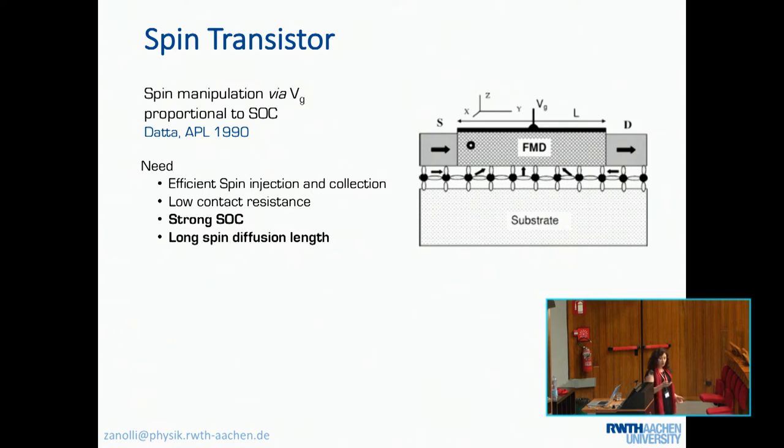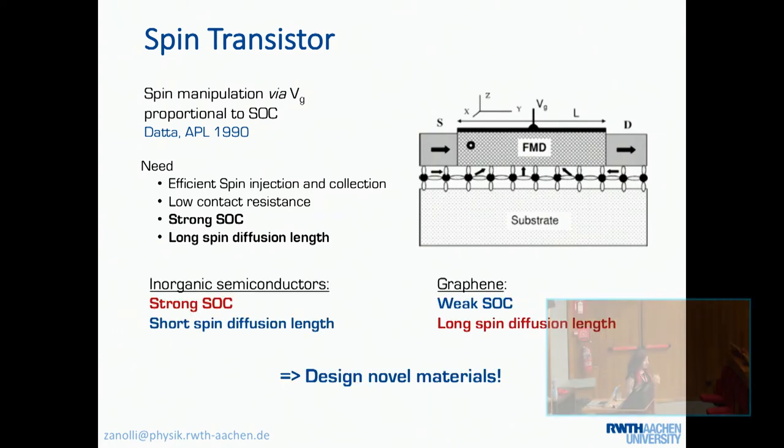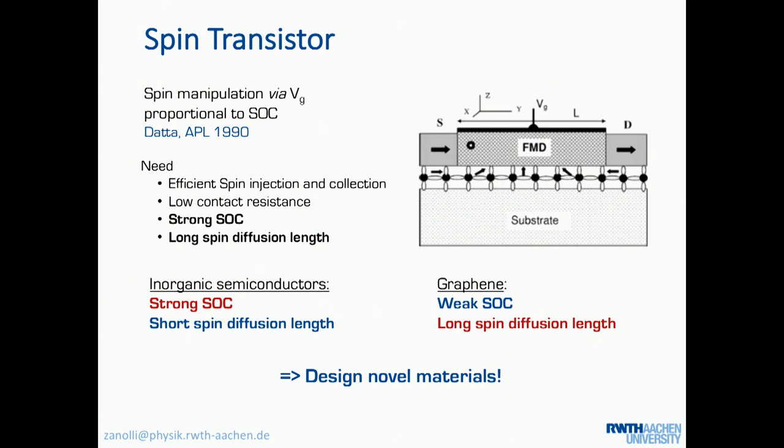So for this, everybody can immediately say, okay, so to make this work, we need a material with strong spin orbit coupling, and very long spin diffusion length. Seems easy in theory. In practice, it's not, because it's very rare. Usually, these two properties are competitive, so it's very difficult to find the material with both strong spin orbit coupling and long spin diffusion length.